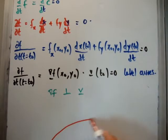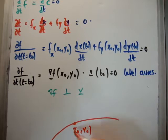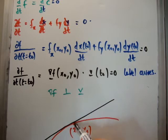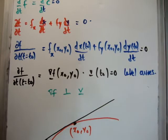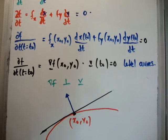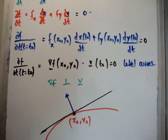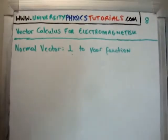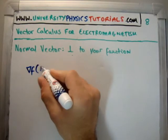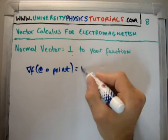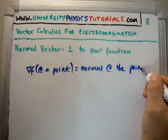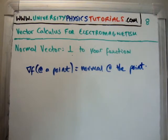Going back to the start: if something is perpendicular to the tangent line, then it's normal to the curve. So what we've found is that the gradient of f evaluated at (x0, y0) is perpendicular to the tangent line, and as a result it's normal to the curve. The bottom line: the gradient of our function at a point equals the normal at that point — it's perpendicular to your tangent line and normal to your function.